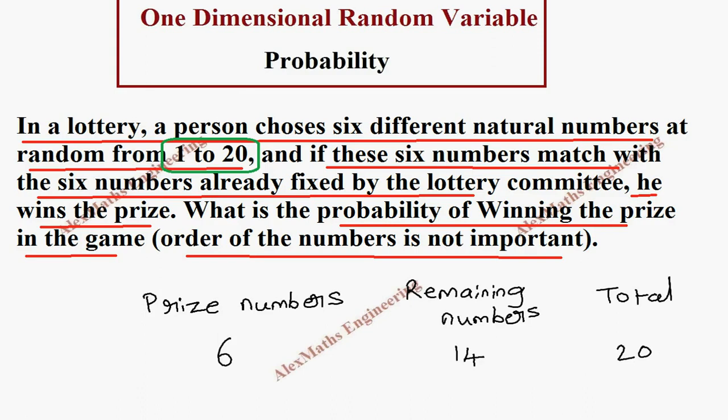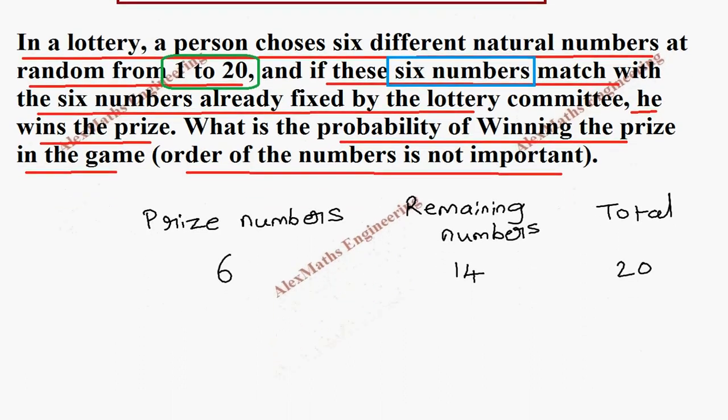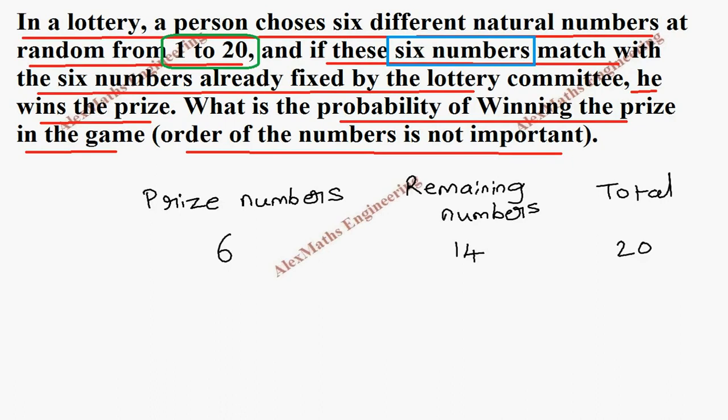Because there are six numbers, if all six numbers are chosen then we get a prize, otherwise no. So the probability of winning the prize: we are choosing six numbers and all six numbers...